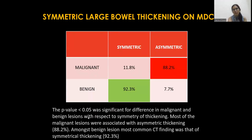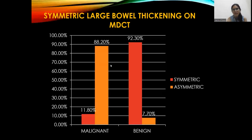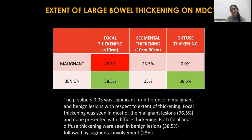Regarding symmetric or asymmetric involvement of large bowel wall thickening, the p-value was less than 0.05, which is statistically significant. Most malignant lesions were associated with asymmetric thickening, while the majority of benign lesions involved symmetrical thickening. Asymmetric thickening was seen in 88.2% of malignant cases, while 92.3% of benign cases showed symmetric involvement.